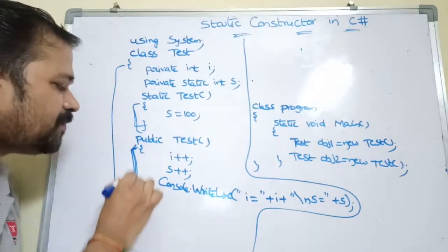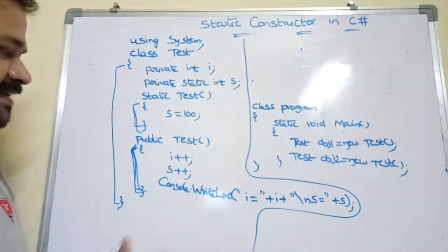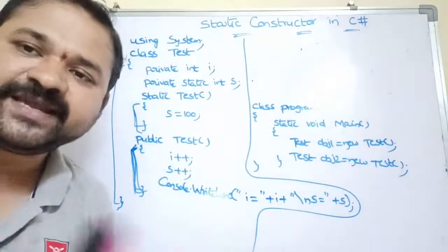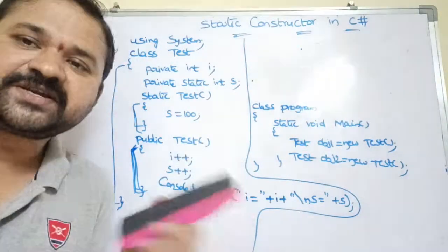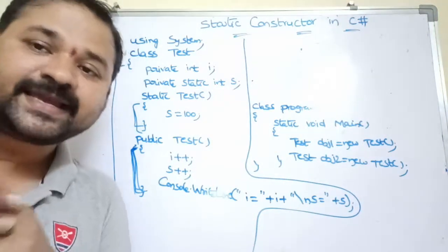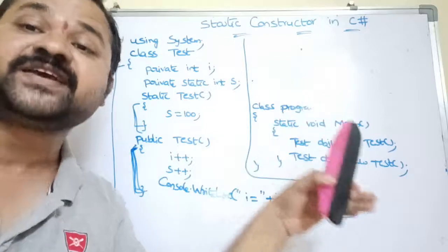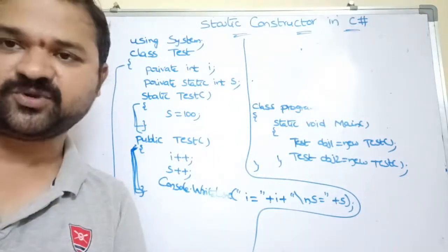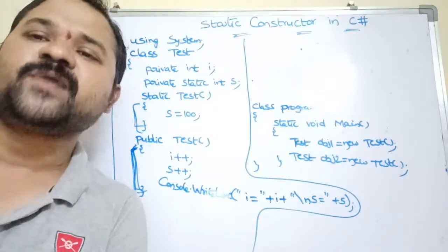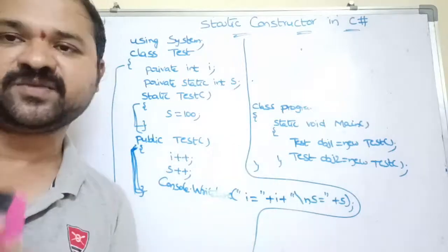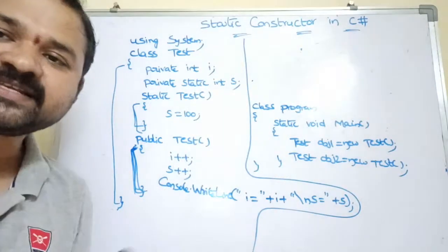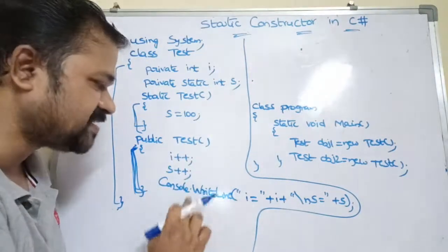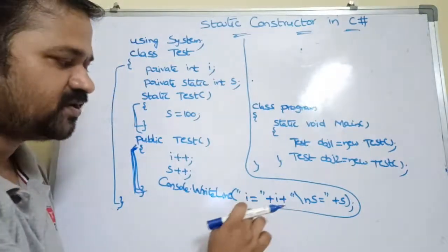Next, we have the default constructor — a normal constructor. In the default constructor we are incrementing the 'i' value and the 's' value. In a default, parameterized, or copy constructor you can access both static variables and instance variables. But a static constructor can access only static variables — it cannot access instance variables. All other constructors can access both static and instance variables.